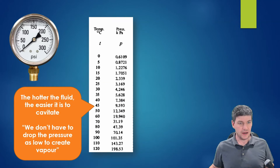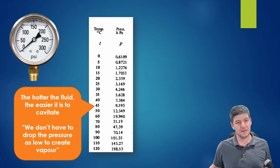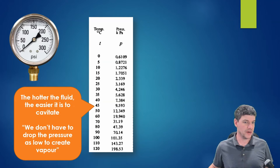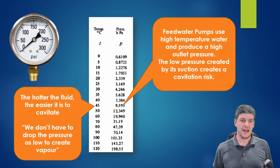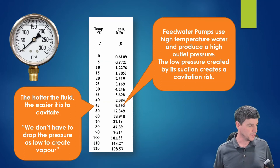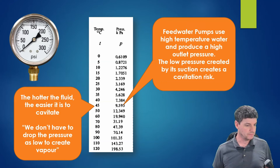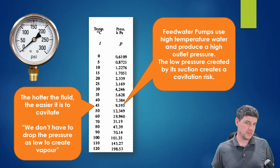The hotter the fluid, the easier it is to cavitate — we don't have to drop the pressure as much to create vapor, because hotter fluid evaporates at a higher pressure. A feedwater pump is a good example: preheated feed water is at high temperature and the pump must produce high pressures to overcome boiler pressure. These two factors combined put a feedwater pump at high risk of cavitation.